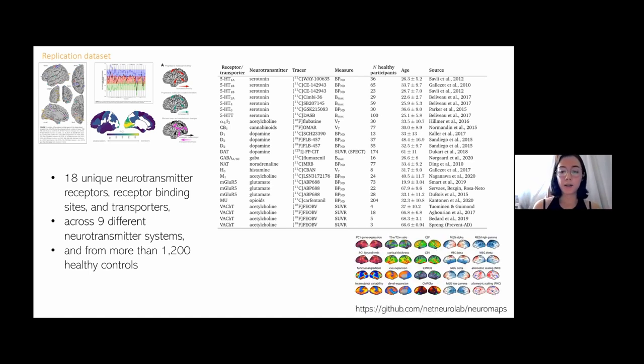I want to shout out that we're going to be making this data, given consent from all the people that shared it with us, available in a toolbox called Neuromaps that is coming out soon that already has a lot of different brain maps. For example, PC1 gene expression, metabolism markers, things like that.